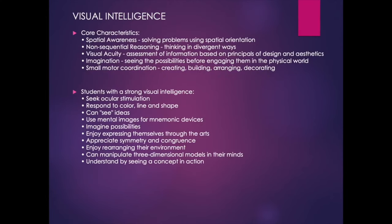Visual-spatial intelligence. Core characteristics: spatial awareness — solving problems with spatial orientation; non-sequential reasoning — thinking in divergent ways; visual acuity — assessment of information based on principles of design and aesthetics; imagination — seeing possibilities before engaging them in the physical world. These are the visionaries of the world — Einstein was like this. Small motor coordination: creating, building, arranging, and decorating. Students with strong visual intelligence seek ocular stimulation, respond to color, line, and shape, use mental images for mnemonic devices, imagine possibilities, enjoy expressing themselves through arts, and can manipulate three-dimensional models in their minds.